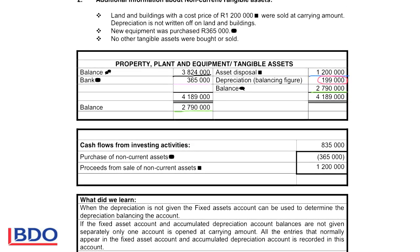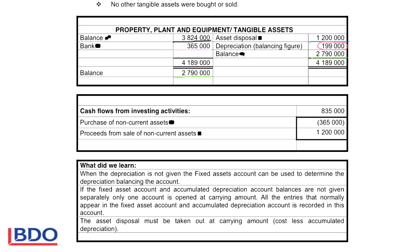If we look at the cash flow statement, we bought new equipment for $365,000, so that caused an outflow of money under investing activities. Investing is how you spend your money. We also sold fixed assets, and that caused an inflow of money of $1,200,000. So although we bought new assets for $365,000 — causing an outflow — the assets that were sold caused the inflow of money. The total net inflow is $835,000.